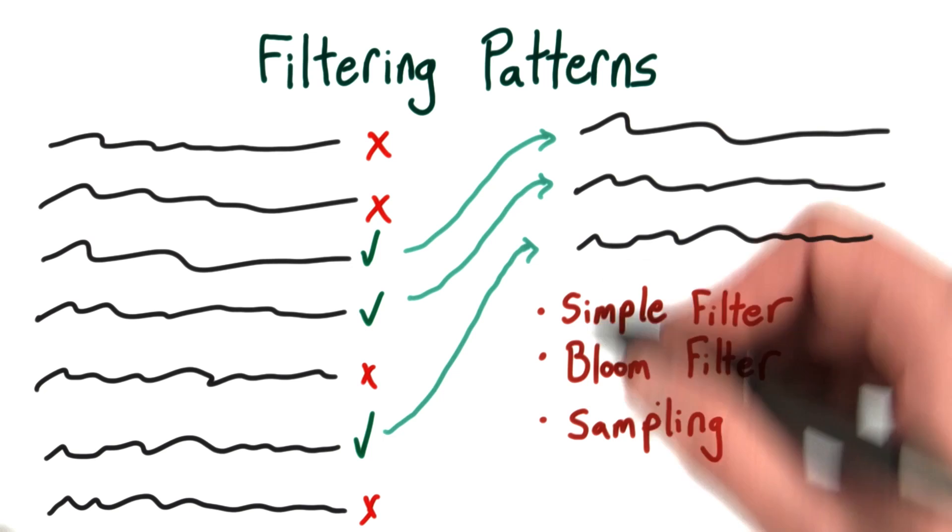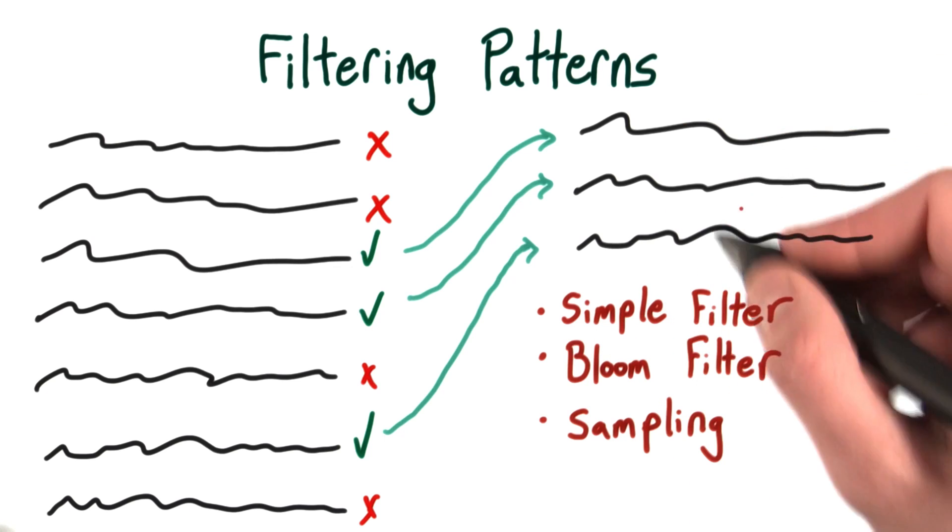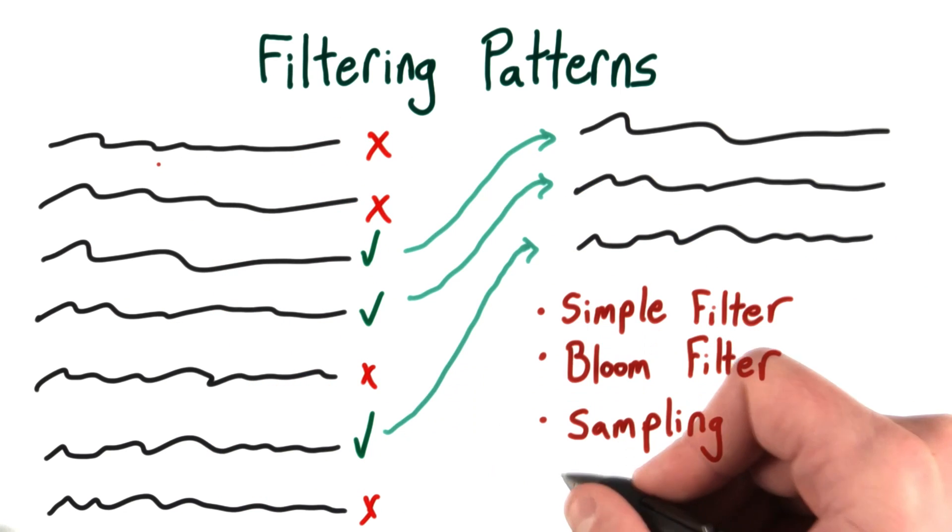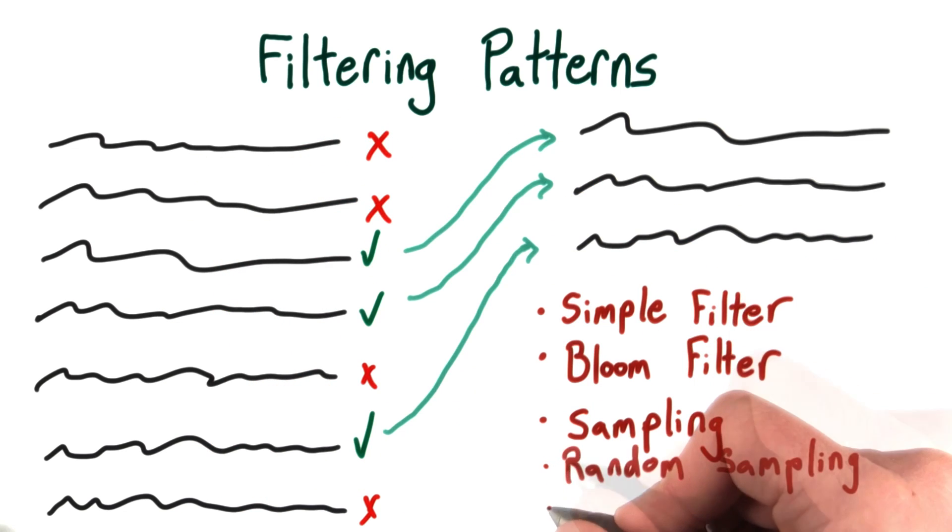If we want to pull out a representative sample—one that matches the characteristics of the original data—we can use random sampling.